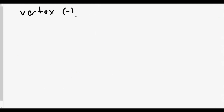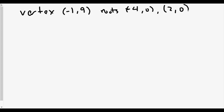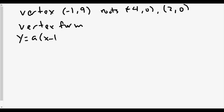So we had our vertex at negative one comma nine. Our root coordinates are going to be negative four comma zero and two comma zero. This helps for finding the equation of a parabola given the vertex and one point, so we use vertex form. The vertex form of a parabola is Y equals A times the quantity X minus H squared plus K, where H comma K is the vertex. Since the vertex is negative one comma nine, our H is negative one and our K is nine.